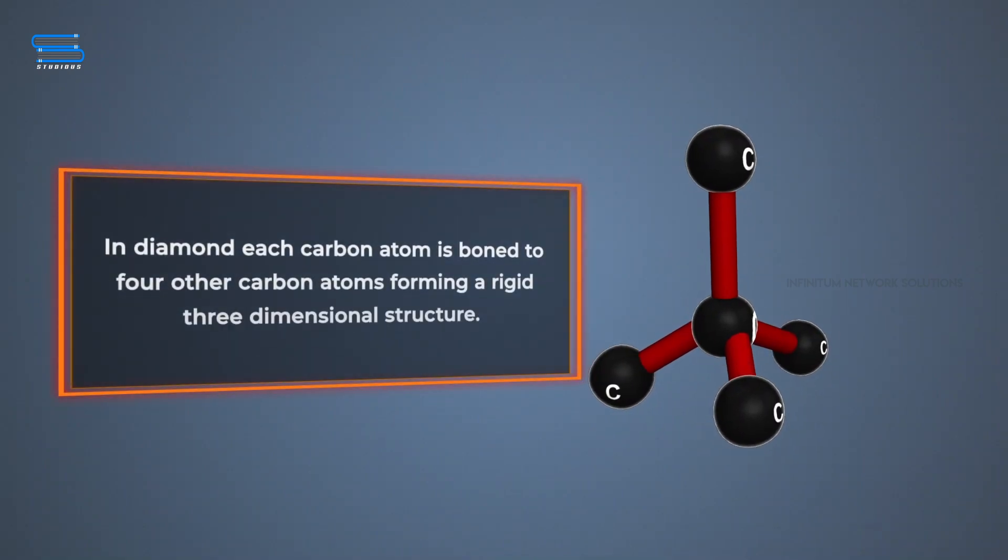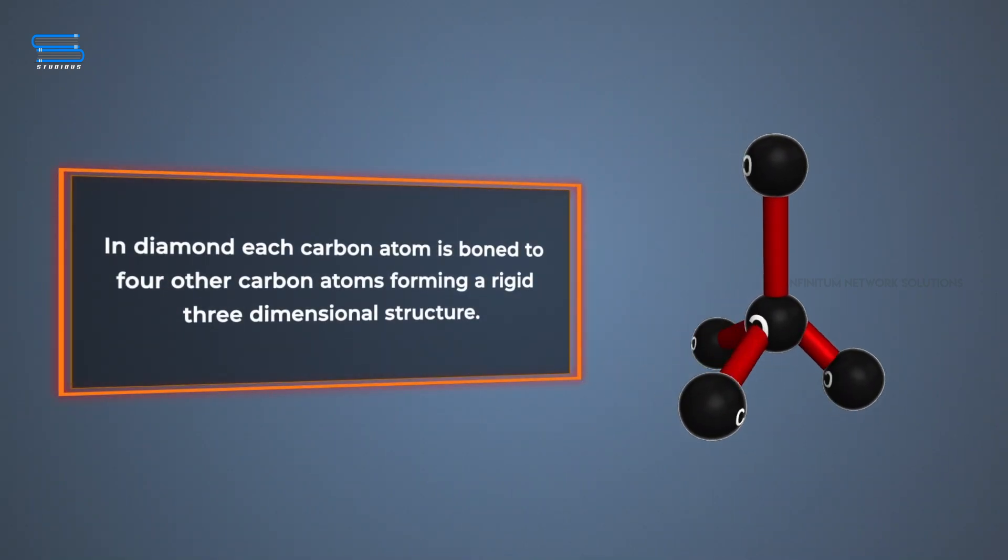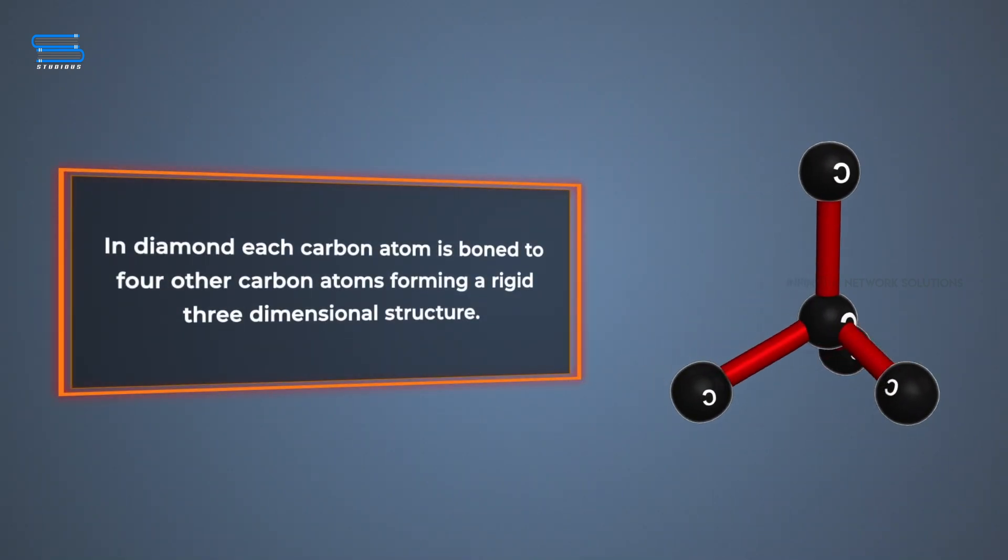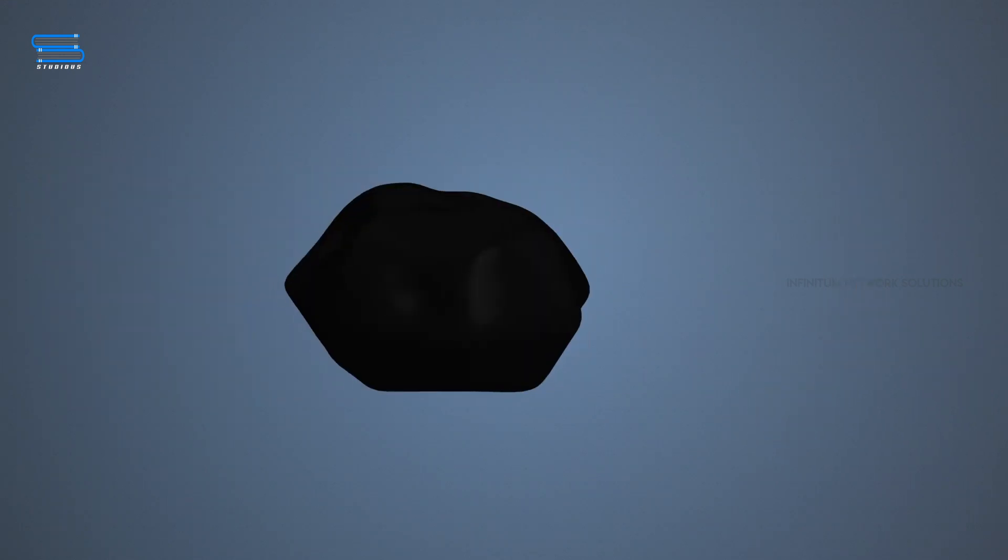In diamond, each carbon atom is bonded to four other carbon atoms, forming a rigid, three-dimensional structure.